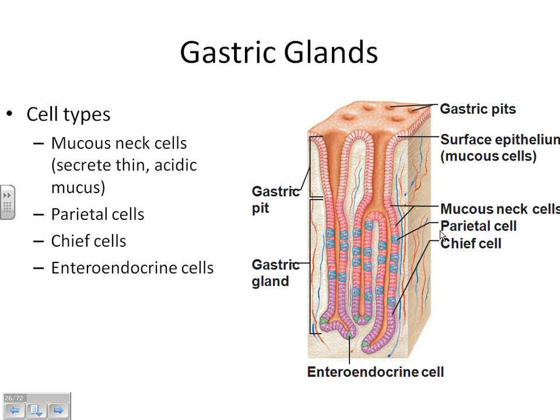Enteroendocrine cells secrete hormones. The two important jobs hormones have in our stomach relate to hunger and fullness. When your stomach is empty, your body secretes the hormone gastrin, which makes your stomach start growling and triggers you that you need to eat something. Once your stomach is full, you stop secreting gastrin and start secreting gastric inhibitory peptide, which tells your brain you're not hungry anymore - don't eat any more food.